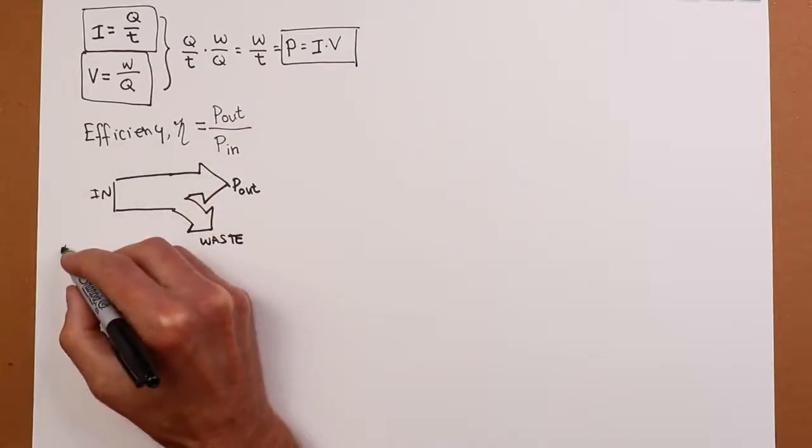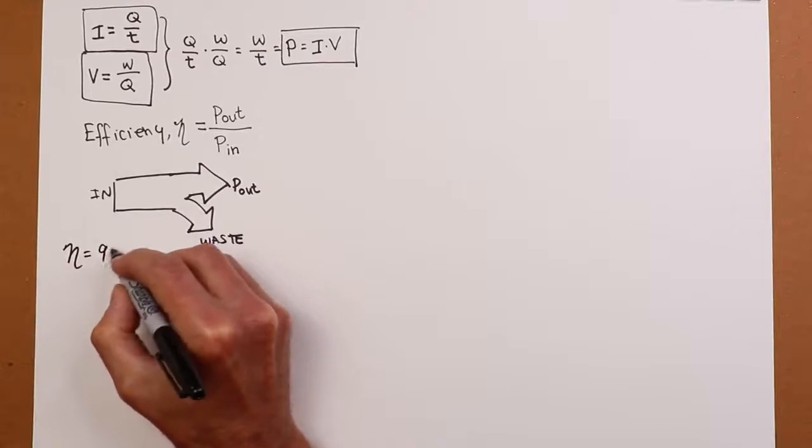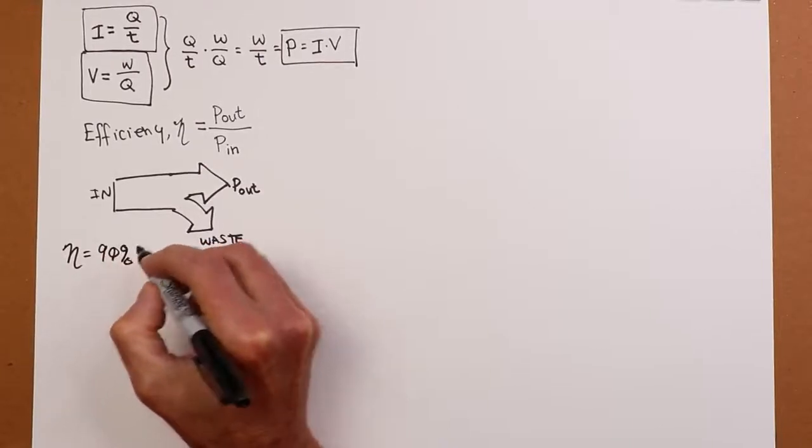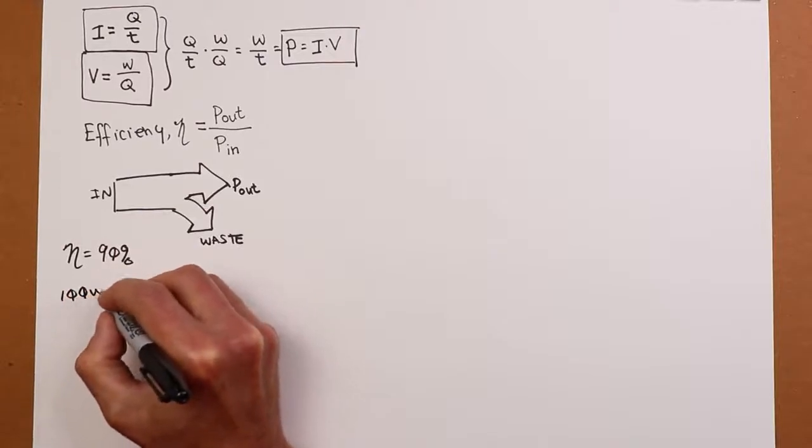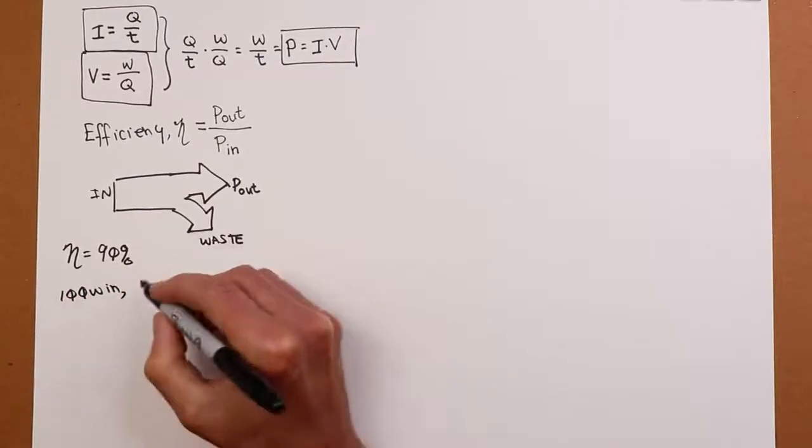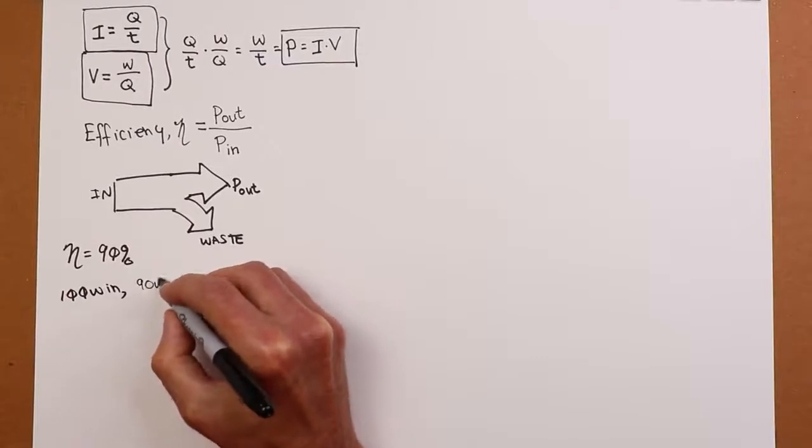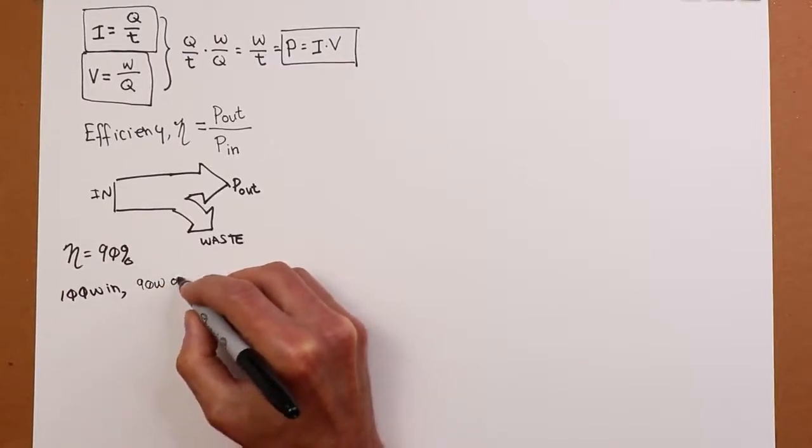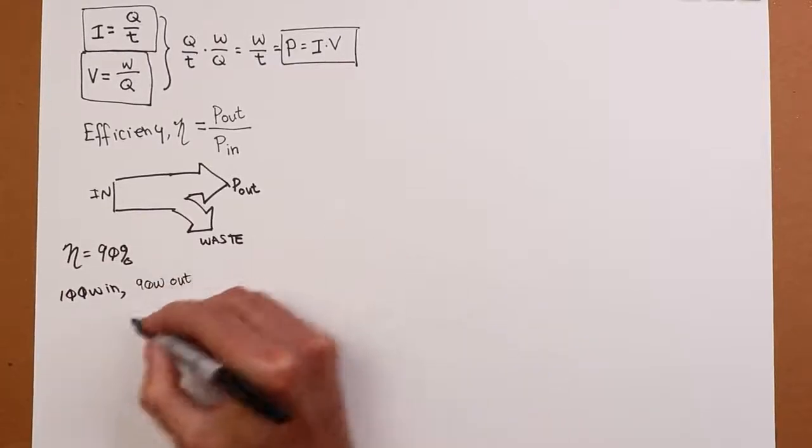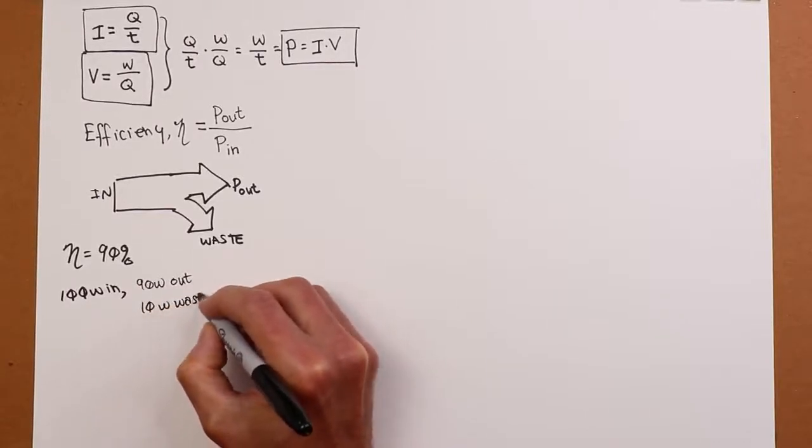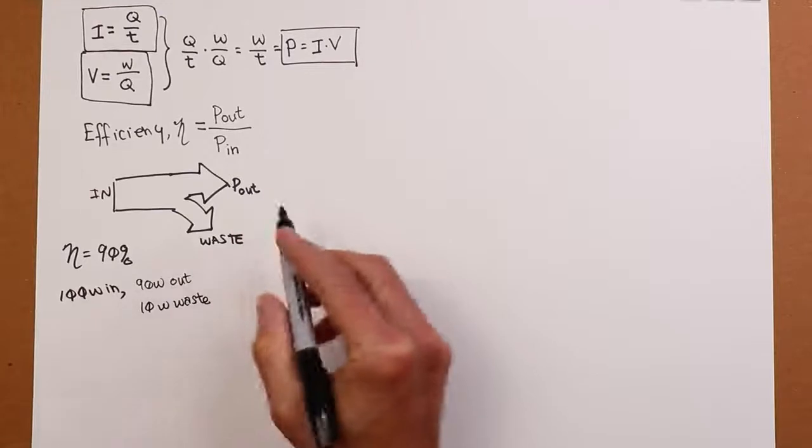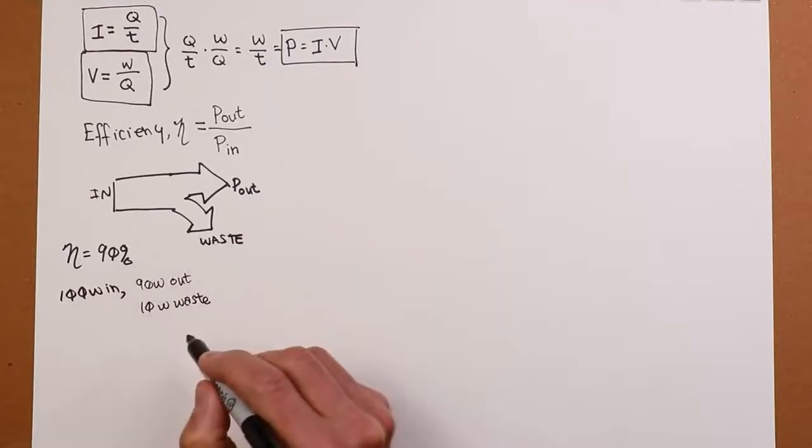So if we said that the efficiency was 90%, if we threw 100 watts in, then we're saying we get 90 watts out. And by extension, 10 watts worth of waste, which in the case of an electronic system, that's heat. And heat is very damaging to semiconductors. So we don't like that.